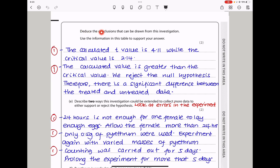Here they said state the conclusion that can be drawn from this investigation, and use the information in the table to support your answer. From the calculated value, which is 4.11, we see the critical value is 2.14, so this value is greater than that. The calculated value is greater than the critical value, so we need to reject that null hypothesis, and that means there is a significant difference between the treated and the untreated results.